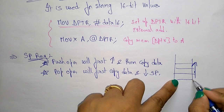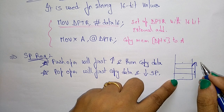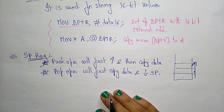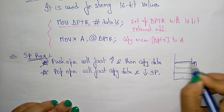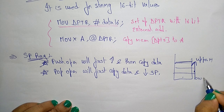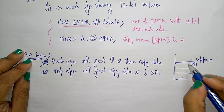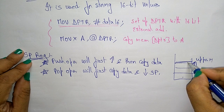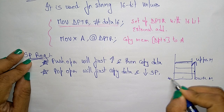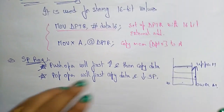The pop operation decrements the stack pointer. In the 8051, the stack grows upwards — from low to high memory — and can only be in internal RAM. The stack operations can be relocated by setting the stack pointer to the upper memory area, from 30H to 7FH.